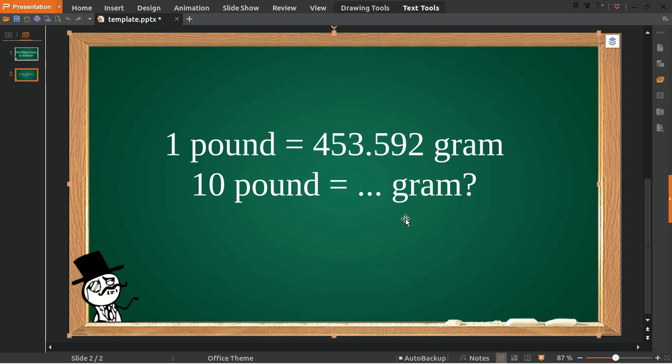Okay, so to answer this question, firstly we need to put this 10 and multiply it with the formula. So 10 multiply with one pound, and then we give it an equal sign.